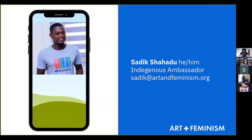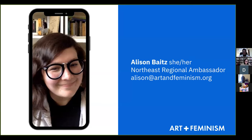My name is Sadiq Shahadu, my pronouns are he and him. I'm a regional ambassador for indigenous communities at Art and Feminism and I will be co-facilitating the session. The purpose of this session is to introduce you to the WPWP campaign — Wikipedia Pages Wanting Photos — and to demonstrate how you can find photos on Wikimedia Commons that are not attached to Wikipedia articles, and how to add images to any Wikipedia article of your choice. And I'm Allison Bates, she/her, the North Northeast regional ambassador for Art and Feminism, which is Northeast USA.